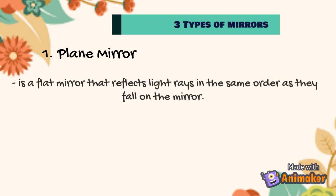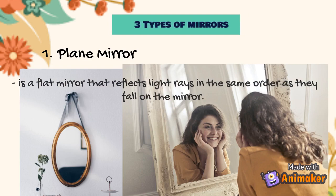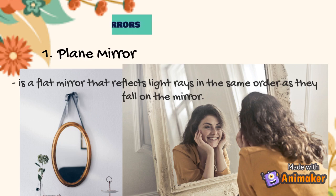There are three types of mirrors. The first one is the plane mirror. It is a flat mirror that reflects light rays in the same order as they fall on the mirror. In other words, the light is reflected at the same angle as the angle of incidence. The image in a plane mirror is reversed from left to right without top-bottom vertical reversal. The size and distance of the object are the same as in reality, and it forms a virtual image.